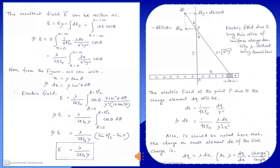So E = Ey, and to calculate Ey we take the integration of dEy. Integration of dEy gives total E. We have chosen the limits from minus infinity to plus infinity, so we integrate cosθ × dE. In place of dE we substitute the value, and we use the substitution x = y tanθ, so that dx = y sec²θ dθ.